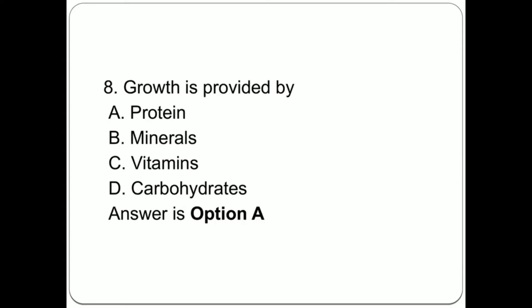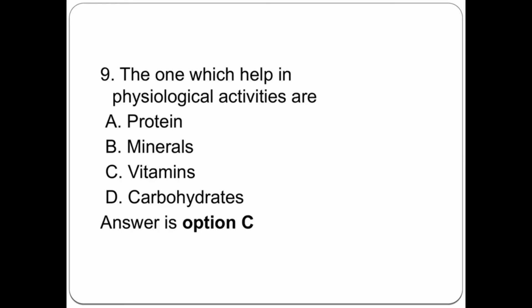Question 8: Growth is provided by: A. Protein, B. Minerals, C. Vitamins, D. Carbohydrates. Question 9: The one which helps in physiological activities are: A. Protein, B. Minerals, C. Vitamins, D. Carbohydrates. Answer is option C, Vitamins.